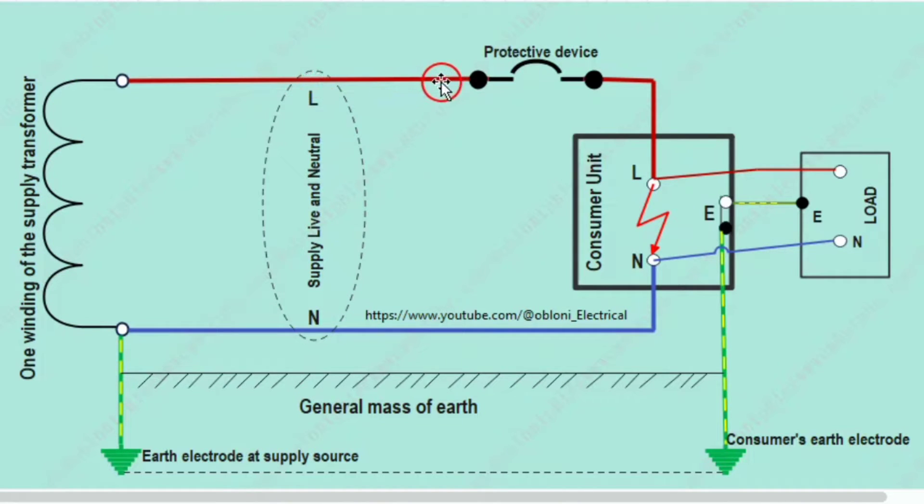Alright, so now what happens if this neutral conductor has a very high resistance or what if there is a break in this neutral wire? Will the high current still flow through the circuit? Keep these questions for now.